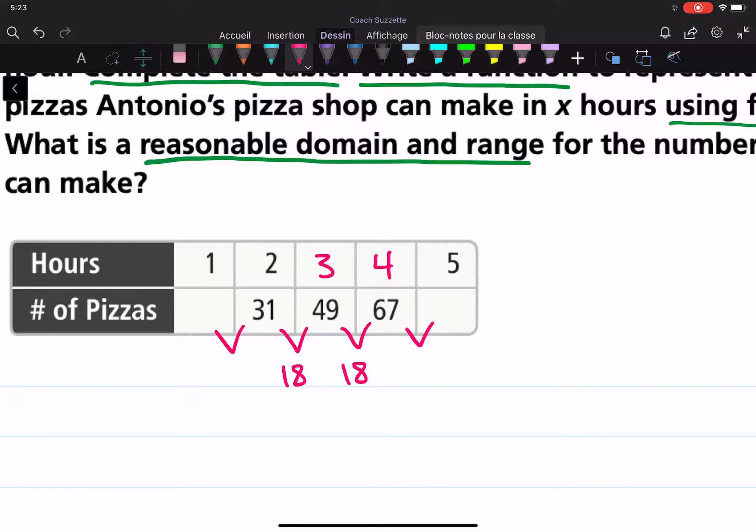So that means that 67 plus 18, this box would be 85. And then this box should be 31 minus 18, which is 13.